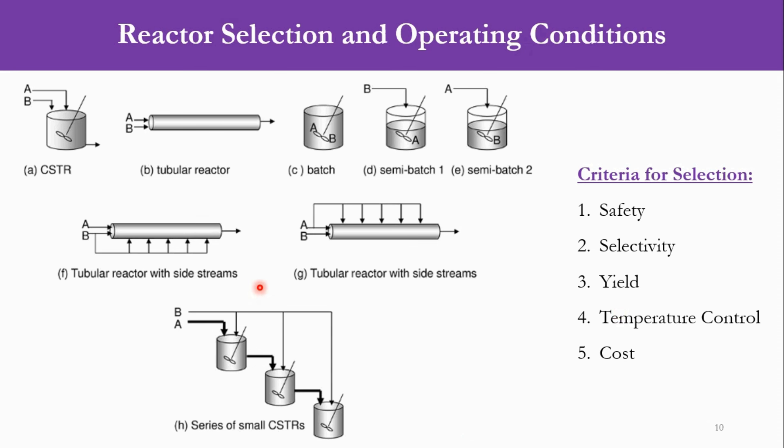Now there are different types of reactors given over here. Number one you can see is CSTR. A and B are fed to the reactant and then we get the product. In the same way for the tubular reactor, both reactants are fed to the reactor and we get the product. Then in part C, it is a batch reactor. In part D, it is a semi-batch reactor. Now D and E both are semi-batch reactor. But the difference is that in the first reactor, A is already fed while B is fed continuously. While in semi-batch 2, B is already fed or charged to the system while the feed of A is continuous in the system.